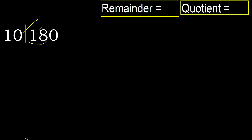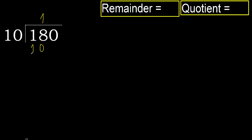Multiply by 2 is 20. 20 is greater. Multiply by 1 is 10. It is not greater, ok. Subtract: 18 minus 10 is 8.